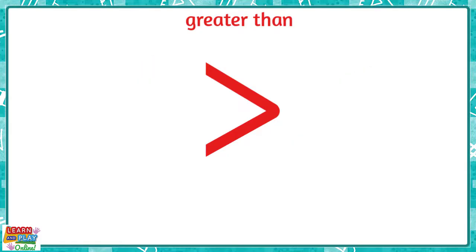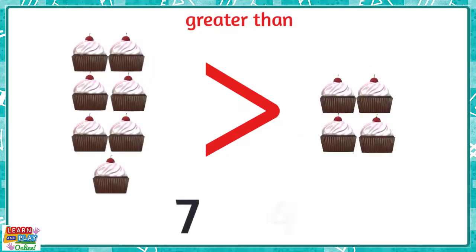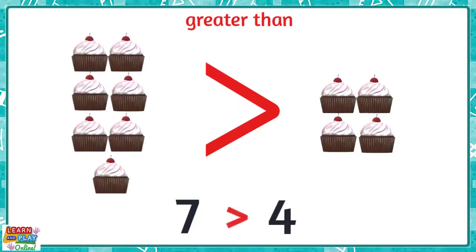Here is another example. Over here we have seven cupcakes and over here we have four cupcakes. You can see that seven is the greater amount because there are more cupcakes on this side. So we say that seven is greater than four.